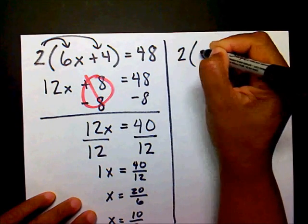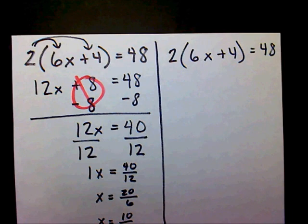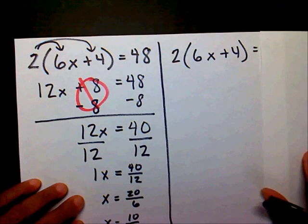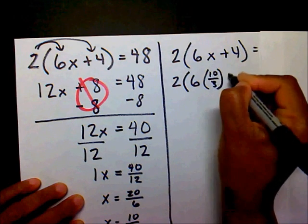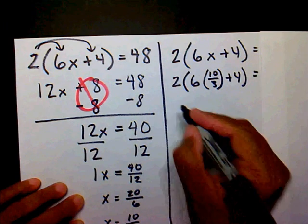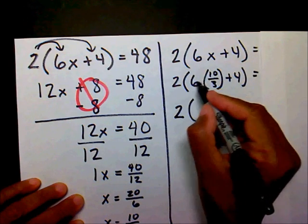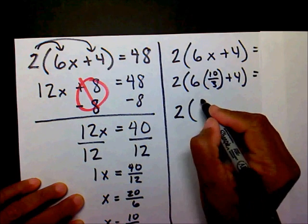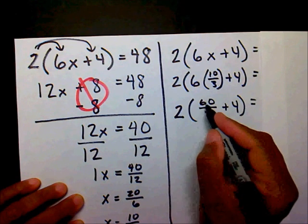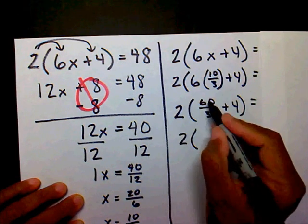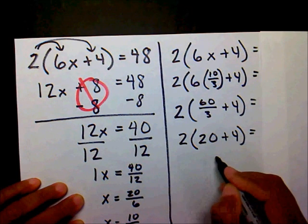So we have 2 times 6x plus 4 equals 48. I'm going to cover up my right hand side, and I'm going to write 2 times 6, instead of writing x, I'm going to write 10 over 3 plus 4 equals. Inside my parenthesis, I'm going to find a solution to this. I have multiplication and addition. I'm going to take care of my multiplication first. So 6 times 10 is 60, 1 times 3 is 3, plus 4 equals. I can simplify 60 over 3, 3 goes into 60 20 times plus 4, 20 plus 4 is 24.